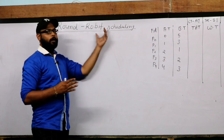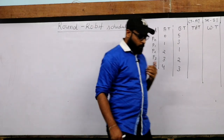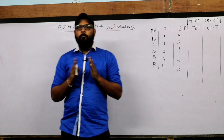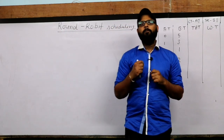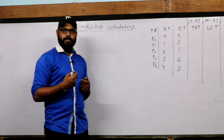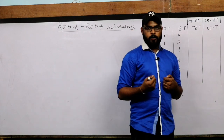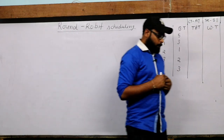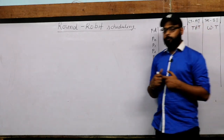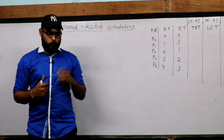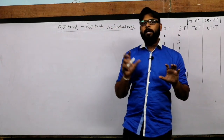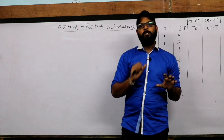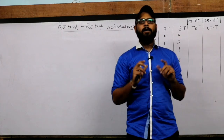For electrical and electronics students, I am explaining: there is an entity called a process. Whenever we do any work on a computer, there is a need for a process. For example, if we play a song, this is a process; if we work on an MS file, this is also a process. Each and every work in a computer is a process. We also have a processor which executes that process. The process resides in main memory, then goes to the CPU for execution.